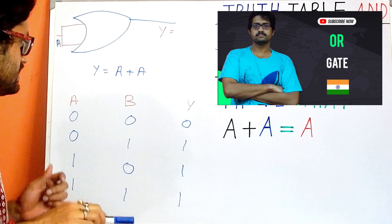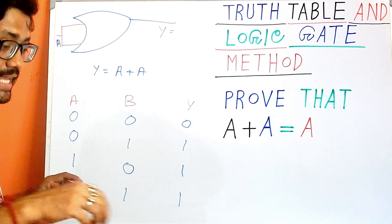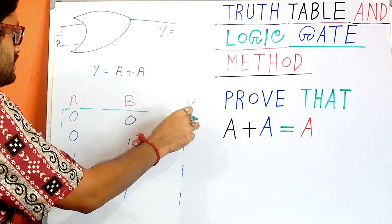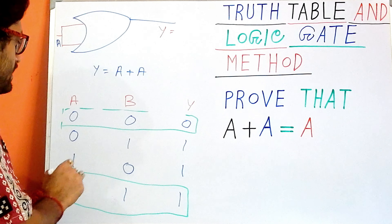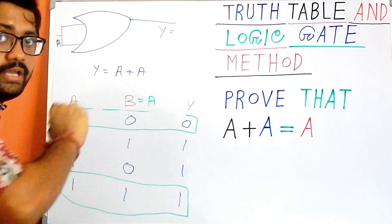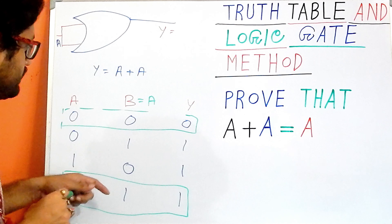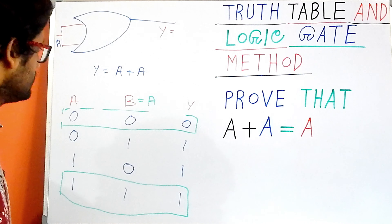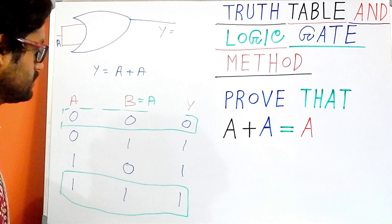As you can see, both inputs are the same, so I can take the combinations where B is equal to A. For those combinations, I will get output zero when A is zero, and output one when A is one.